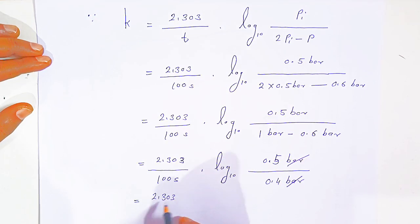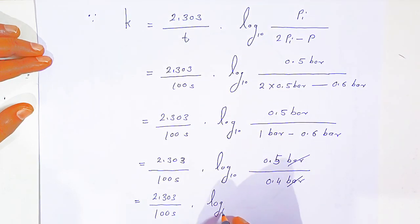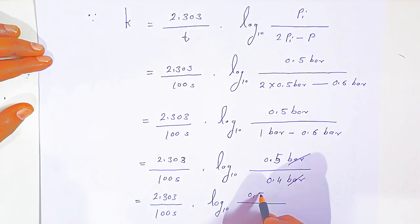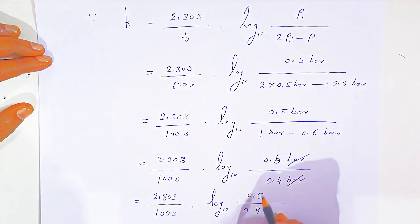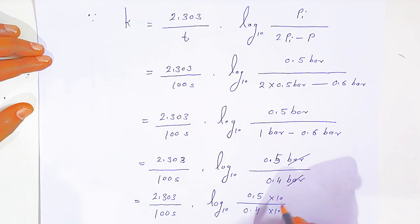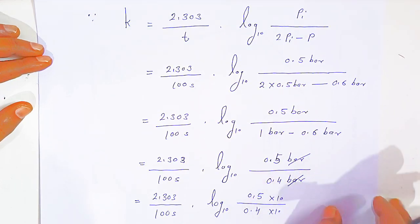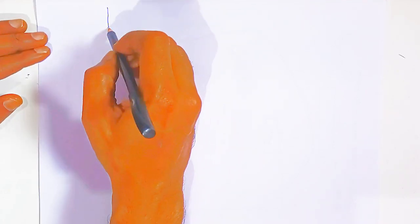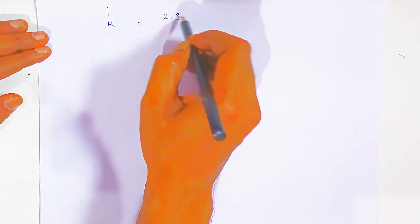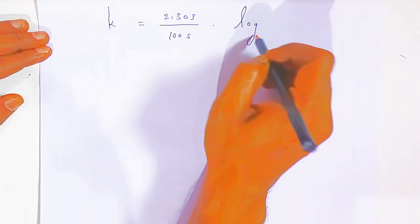This gives k = 2.303 / 100 seconds × log₁₀ of (0.5 / 0.4). Multiplying numerator and denominator by 10 to remove the decimal, 0.5/0.4 becomes 5/4, so k = 2.303 / 100 seconds × log₁₀ (5/4).